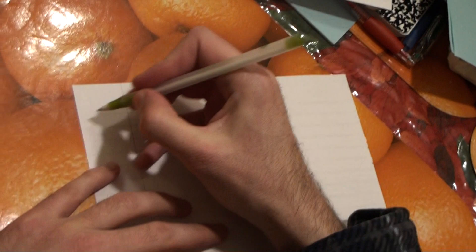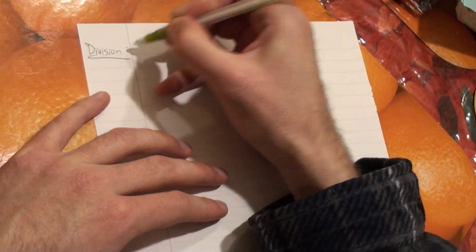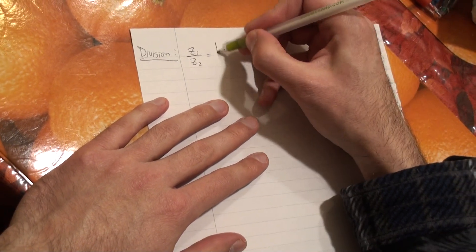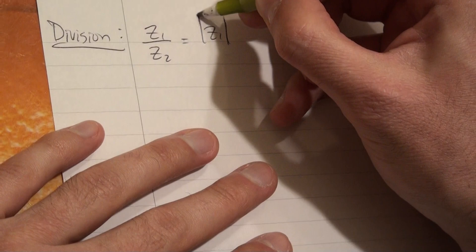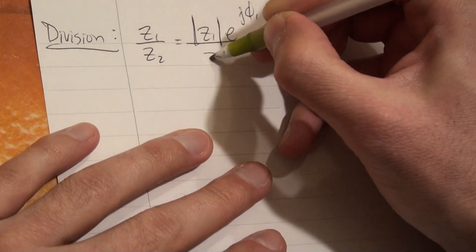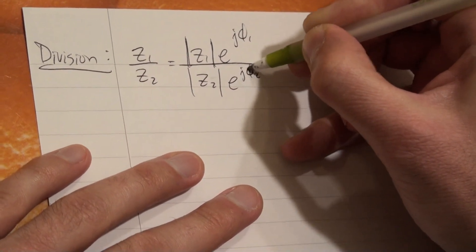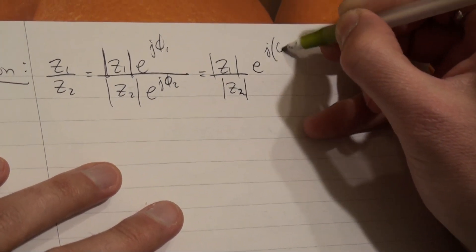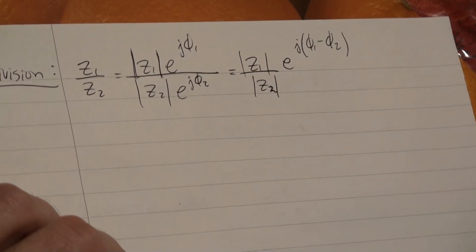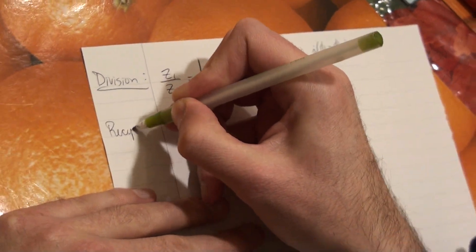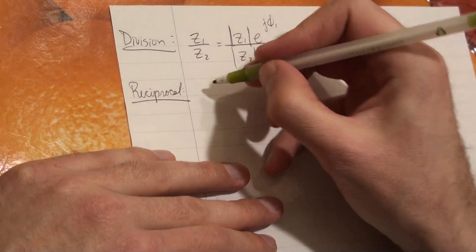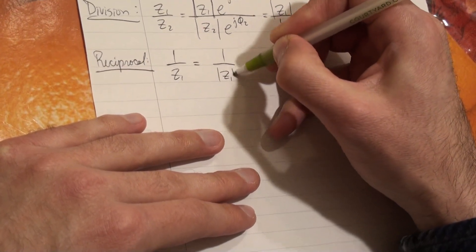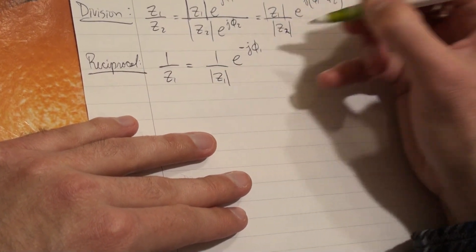For division, it's again useful to use polar format. Z1 divided by Z2 is: magnitude Z1 times e to the J phi1 over magnitude Z2 times e to the J phi2 — so your magnitudes divide as normal and your exponents are subtracted. For the reciprocal, 1 over Z1 using exponential form: you have 1 over your magnitude and the exponential just gains a minus sign.